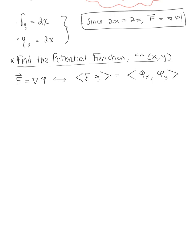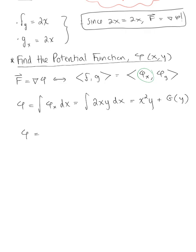Pick your favorite component and start there. I'll go with the partial derivative of phi with respect to x. So phi equals the integral of the partial derivative of phi with respect to x, which is the F component of our force field. This is the integral of 2xy dx. Integrating with respect to x gives us x squared y plus an arbitrary constant function in terms of y. We need to find that function, so phi equals x squared y plus g of y.